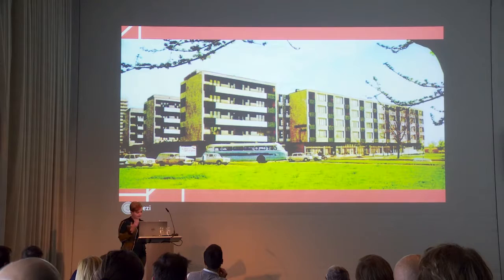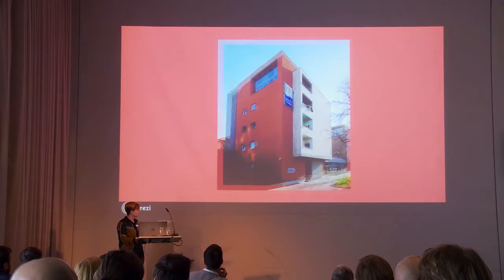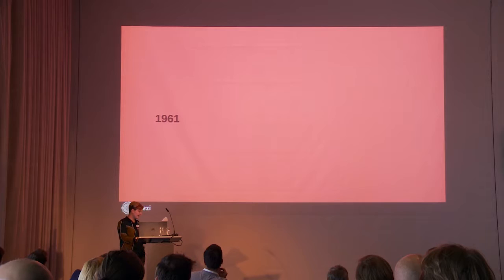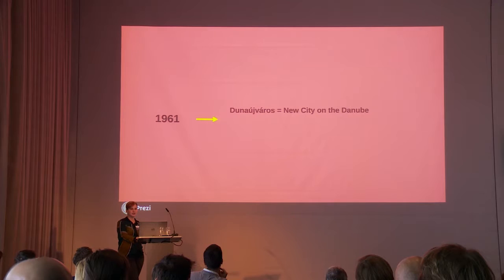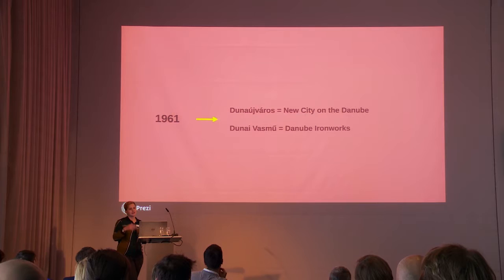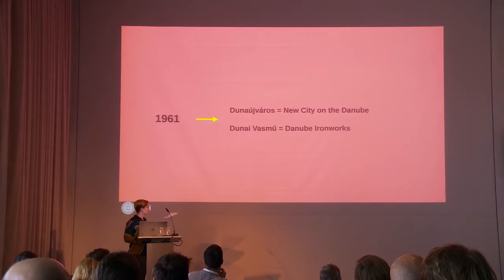This building is an excellent example of the second period of modern style, which I mentioned earlier. In 1961 both the town and the ironworks received new names — from Stalin City it became Dunaújváros, meaning 'new city on the Danube,' and the Stalin Ironworks became the Danube Ironworks, Dunaújváros Mű.